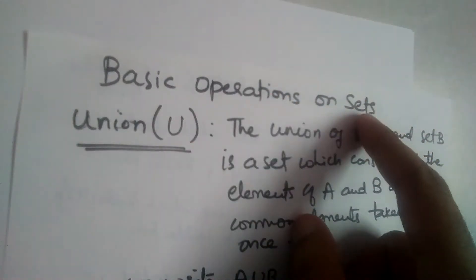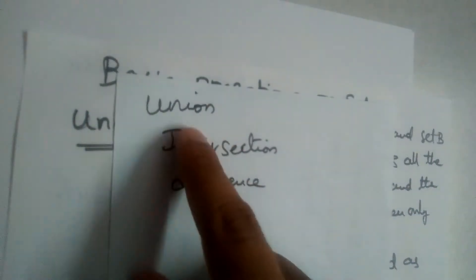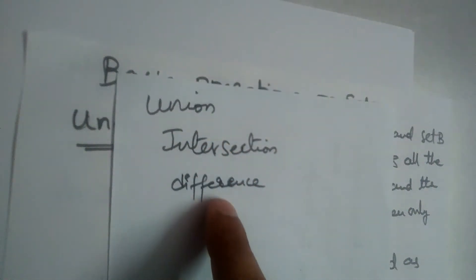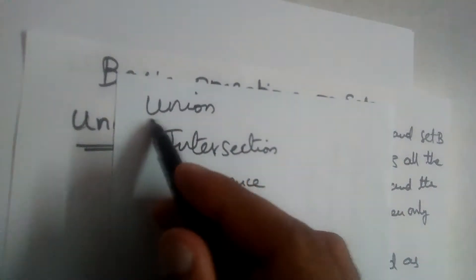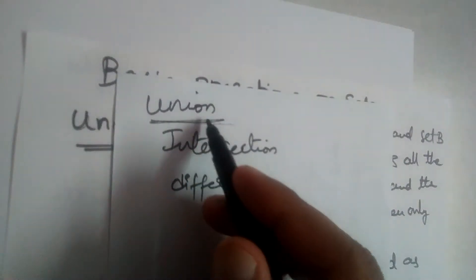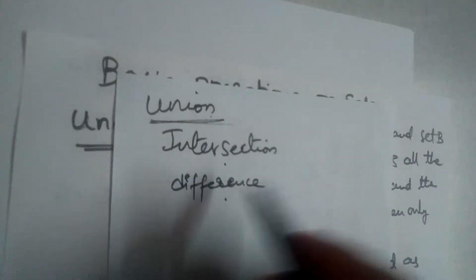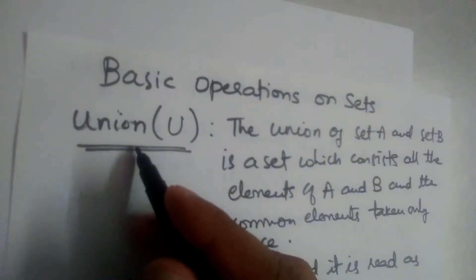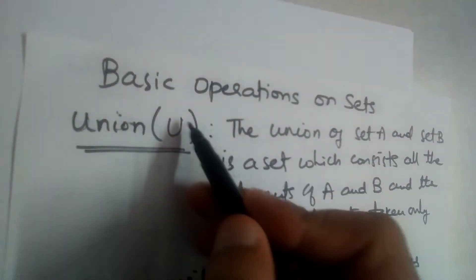We have three basic operations on sets: union, intersection, and difference. In this video we will learn union. What are the three basic operations? Union, intersection, and difference.